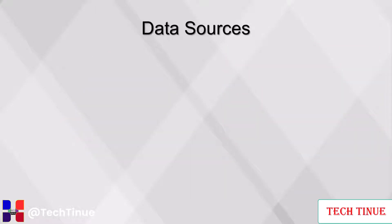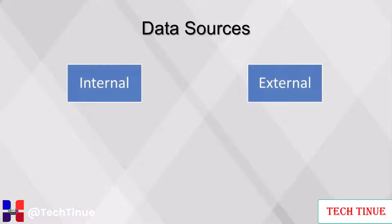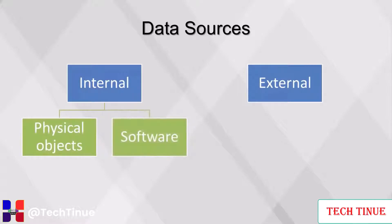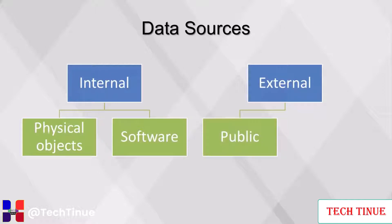Data can come from a variety of sources, both internal and external. Internal data is collected by businesses and stored within their own servers, generated by physical objects such as sensors or barcodes, or by using computer software such as websites. There are also many external data sources that businesses can use: public domain data sources such as government surveys or social media posts, and paid data sources like stock market or weather data.